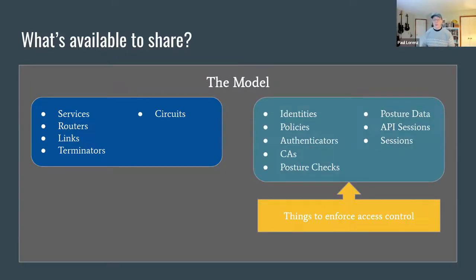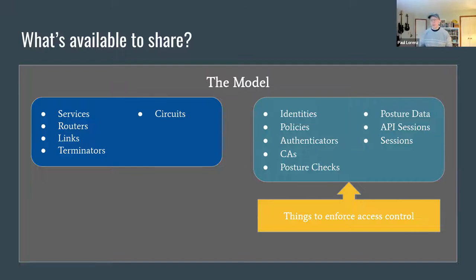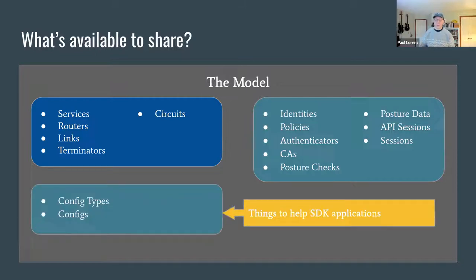On top of that, we have things to enforce access control — who is allowed to access services, how they're allowed to access them, who's allowed to use which edge routers. How are these identities authenticated, things for managing continuous authentication, and runtime data tracking — who's been authenticated against what. We also have a few things in the edge to help SDK applications: config types and configs. This is just a way for services to have associated information that the SDKs can see. Tunnelers use this to configure themselves to know how to intercept and host services.